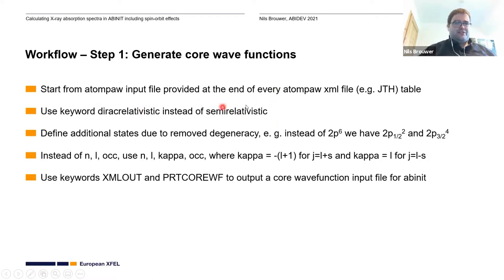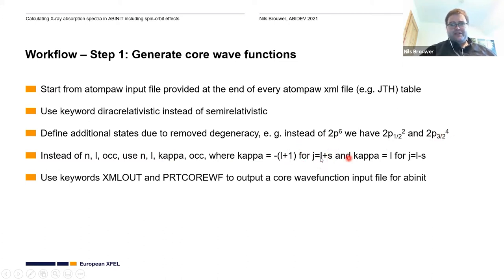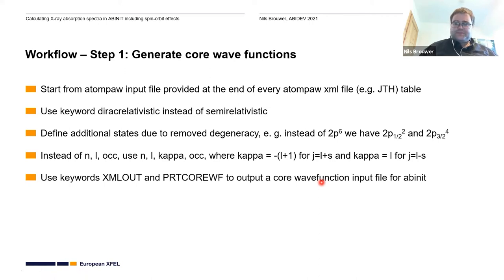The first step is you need to replace the keyword semi-relativistic — which is usually used for the JTH table — with direct relativistic. Then you need to define some additional states because, due to the spin-orbit splitting, several degeneracies that were present without spin-orbit coupling have now been lifted. For example, instead of a 2p state, you will have a 2p 1/2 and 2p 3/2 state. To distinguish those two states, there's a new variable called kappa, which equals minus L+1 for the spin-parallel case (j=3/2) and equals L for the spin-antiparallel case (j=1/2). Then you can use the keywords xmlout and plt_core_wave_function to print out an XML core wave function file that can be used in ABINIT.